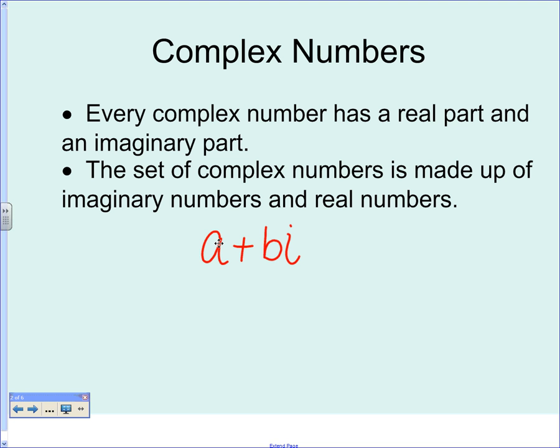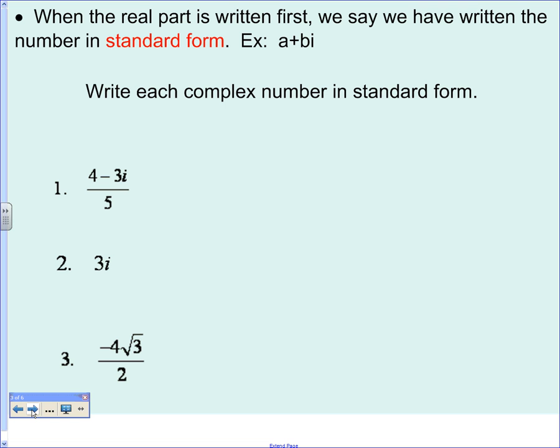That's the form you want to write them in. What is the a? The real part. What is the bi? Imaginary. Okay, this is called real part and it's called standard form. Your real part always comes first and your imaginary part always comes at the end. So a plus bi and then b is multiplied by your i.